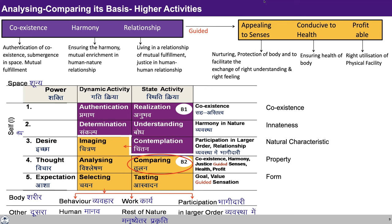These three bases of comparing get guided by coexistence, harmony, and relationship and get transformed. Earlier the basis of appealing to senses was leading to indulgence, but now it is meant for nurturing and protection of the body and to facilitate the exchange of right understanding and right feeling. The basis for conducive to health now gets guided in terms of ensuring health of the body. And the basis for being profitable is now leading to right utilization of the physical facility.